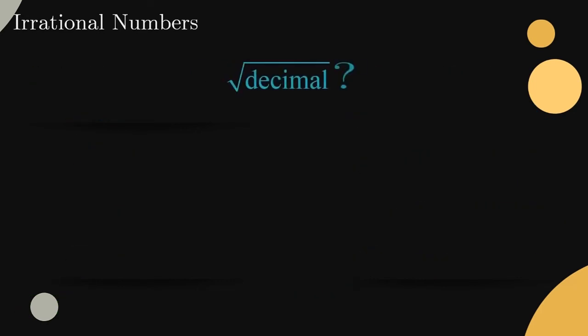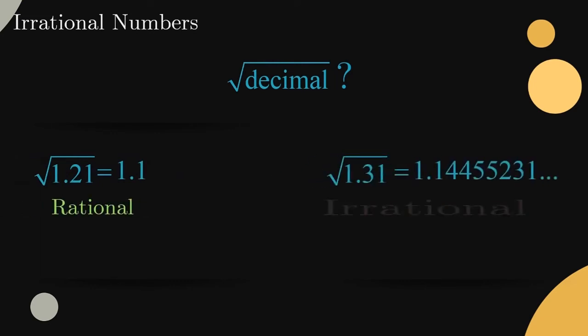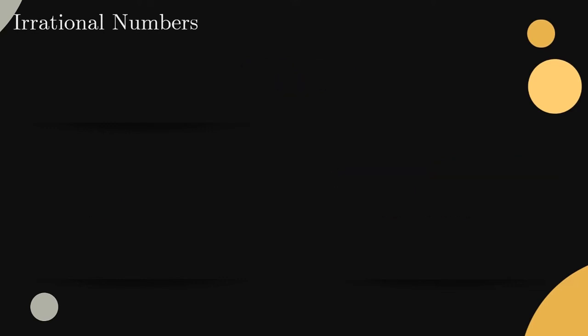What about square roots of decimals? Well, it depends on what the decimal is. For example, the square root of 1.21 is exactly 1.1, which as we know is rational. But the square root of 1.31 is irrational. So why the difference? Without diving deep into the underlying theory, which actually involves several laws related to exponents, the main idea is that if we can write the decimal as a ratio of two perfect squares, its square root will be rational.